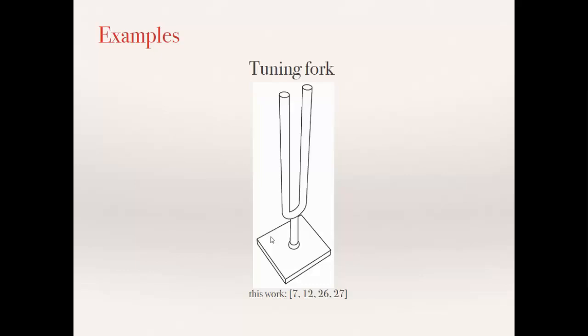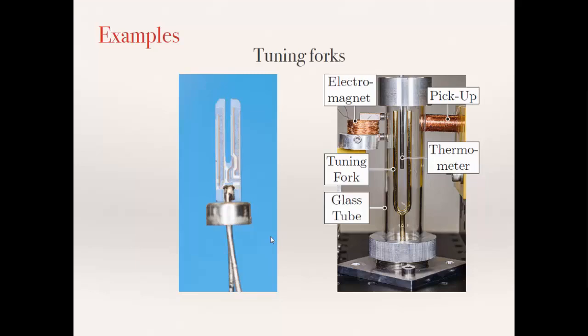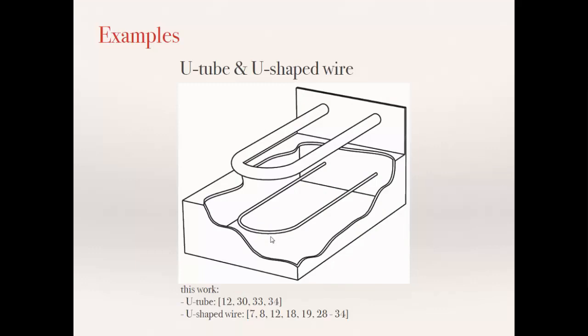I think the most promising devices for this viscosity mass density sensor are tuning fork-based sensors. There are multiple reasons for that. One of the main reasons is that their resonance frequency is the most stable by its mechanical structure. So they are singly clamped. They show low sensitivity to temperature. And they are balanced resonators, which is very important if you want to have handheld devices. Any other devices like singly clamped devices like micro-cantilevers, they depend on the surrounding of the clamping. So tuning forks. And yesterday I was also talking about U-tube and U-shaped wire resonance.